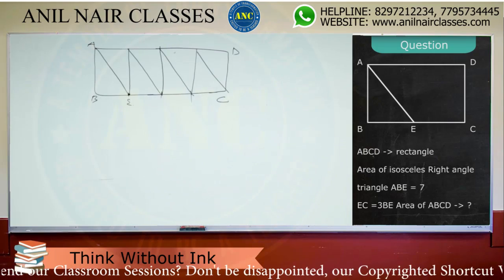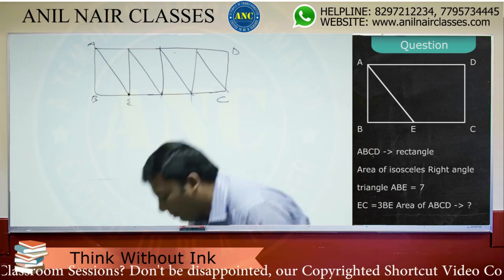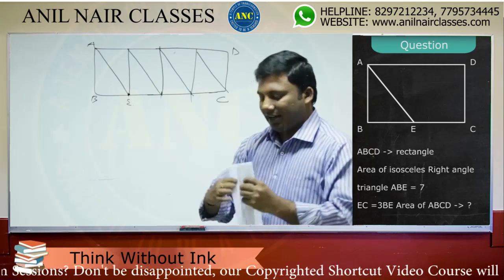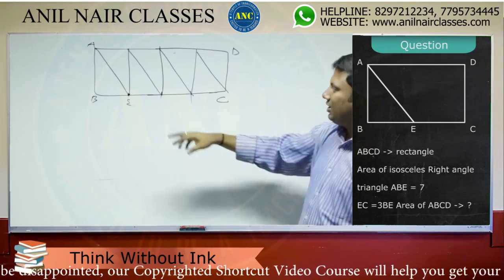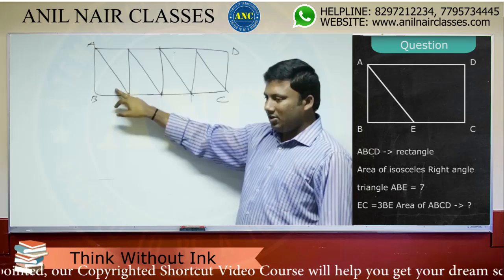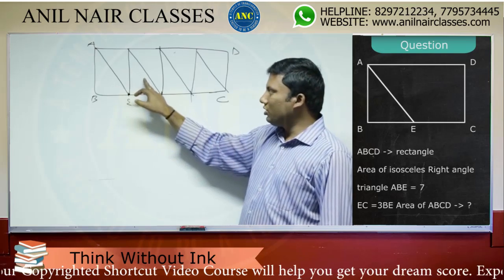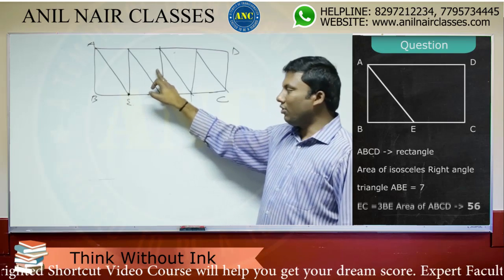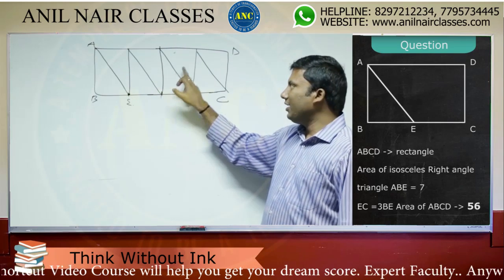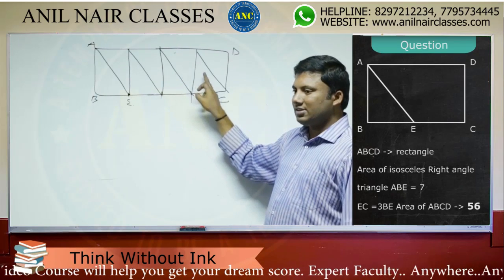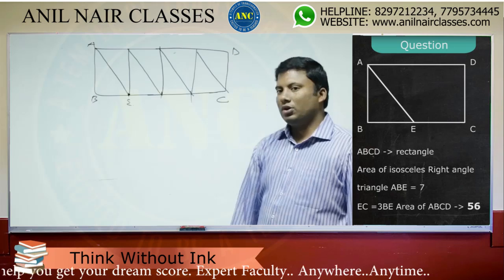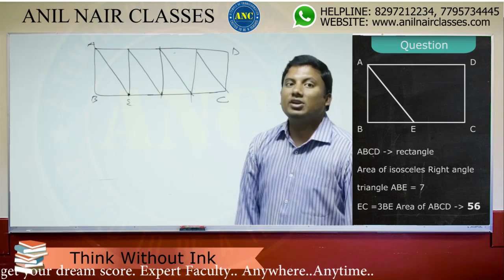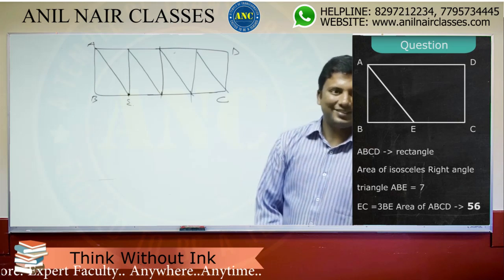How many foldings are there? That many areas I will get. What are all the foldings? 1, 2, 3, 4, 5, 6, 7, 8. What is 8 into 7? 56.